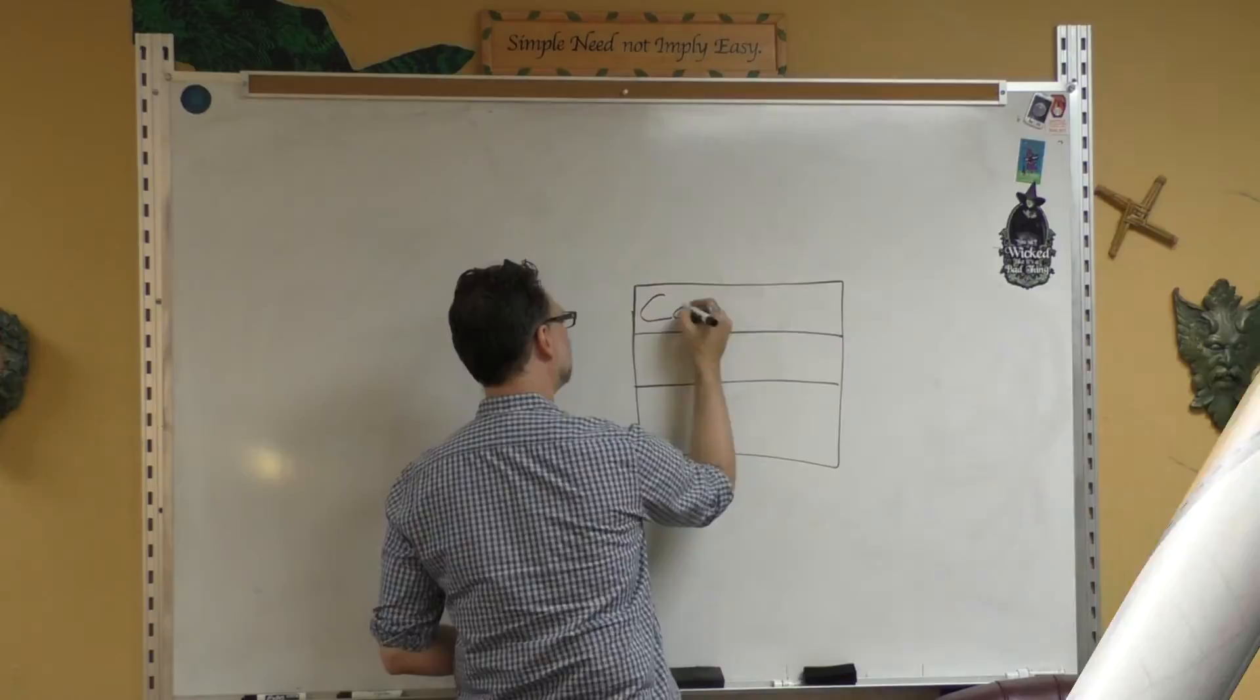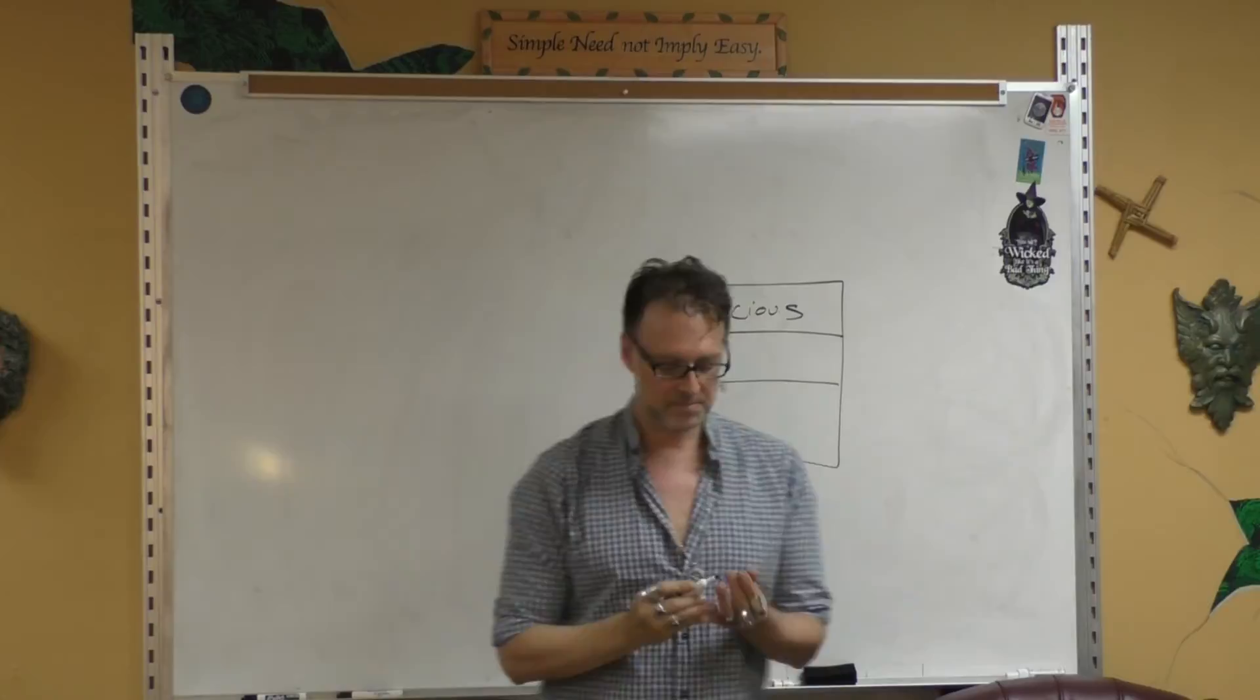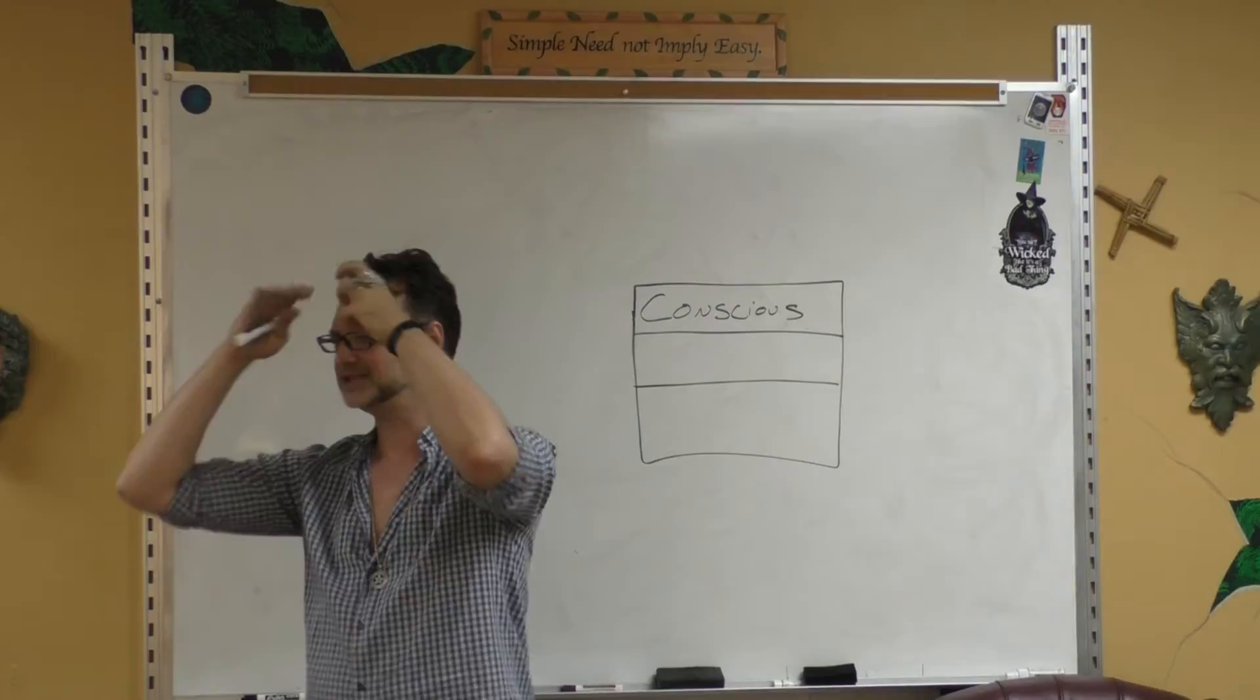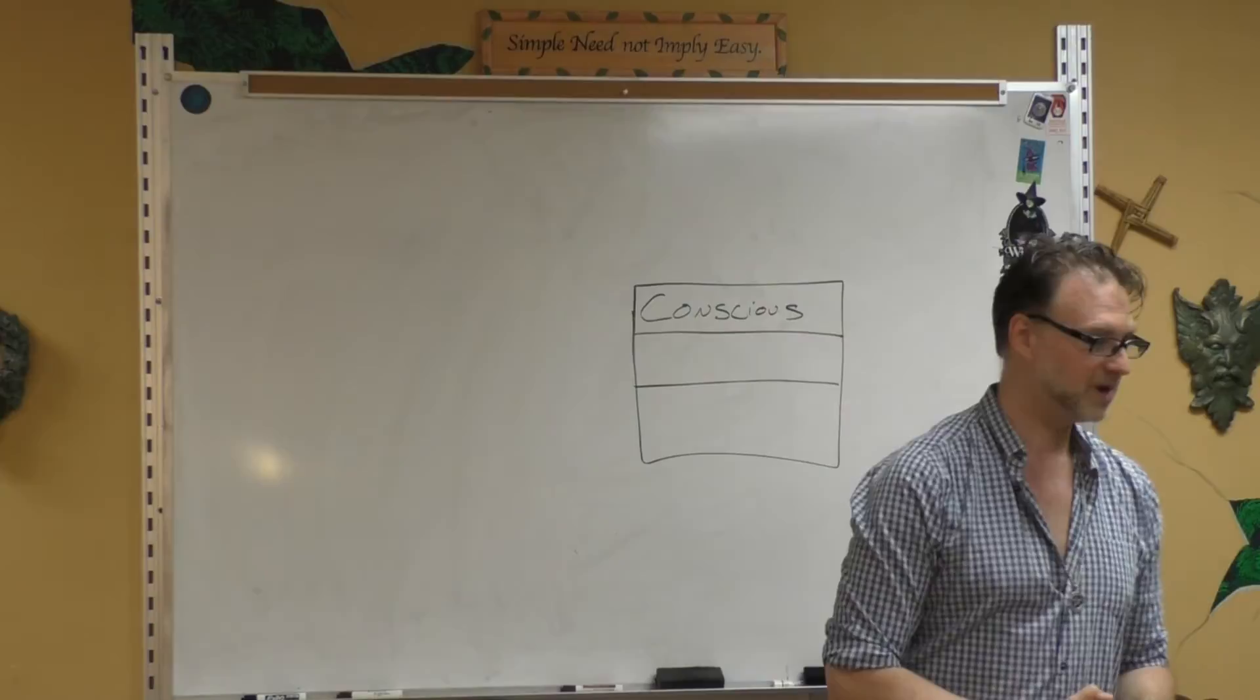The top level is called the conscious mind, the monkey mind, the chattering mind. That's when you can't sleep because the mind's going like this: talking, talking, talking. It is the repository of the five senses. That mind.